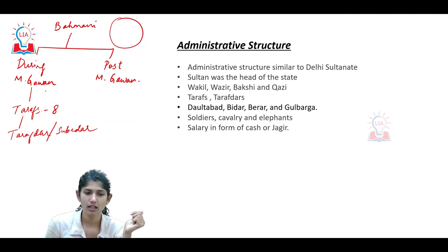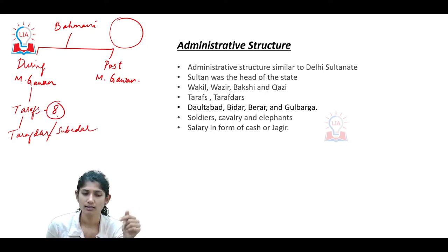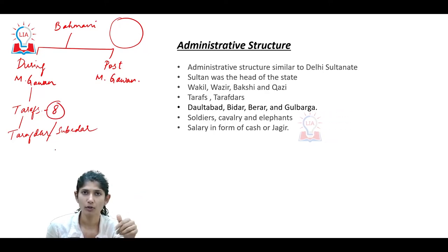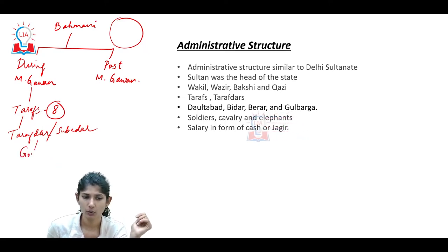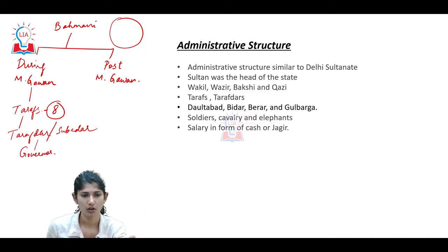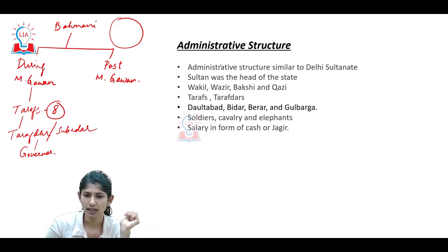To curb that, Mohammed Gawan came up with the division of provinces. Each province would be looked after by a Tarafdar, and above the Tarafdar would be a governor appointed by the central government - that is, by the Bahamani king.